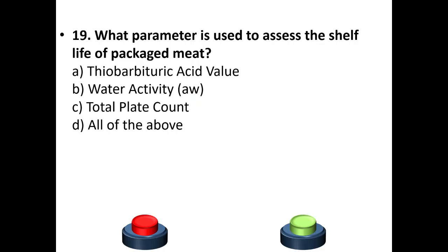Question 19: What parameter is used to assess the shelf life of packaged meat? Options: thiobarbituric acid value, water activity, total plate count, all of the above. The answer is option D: All of the above.